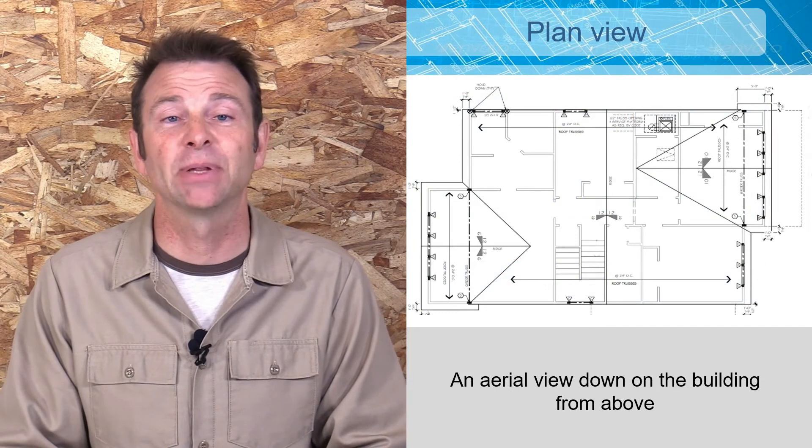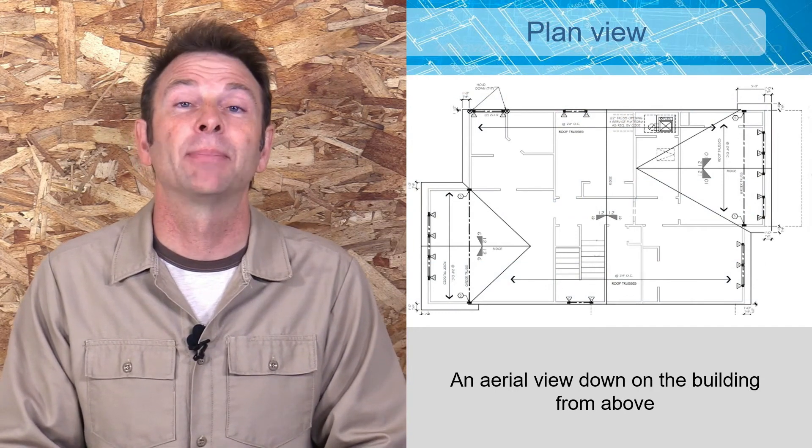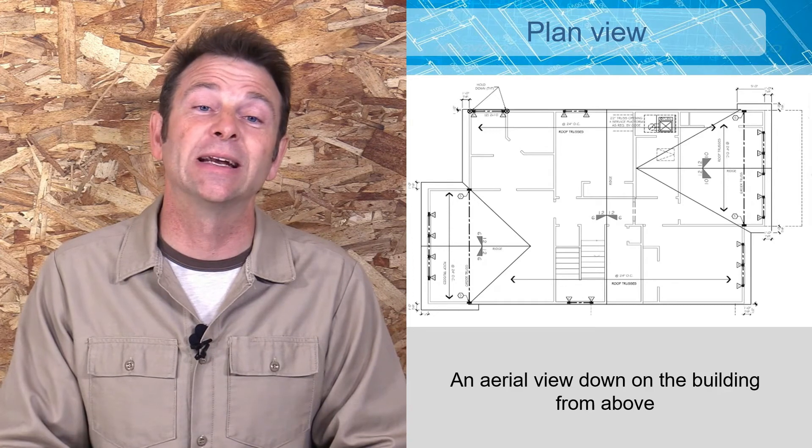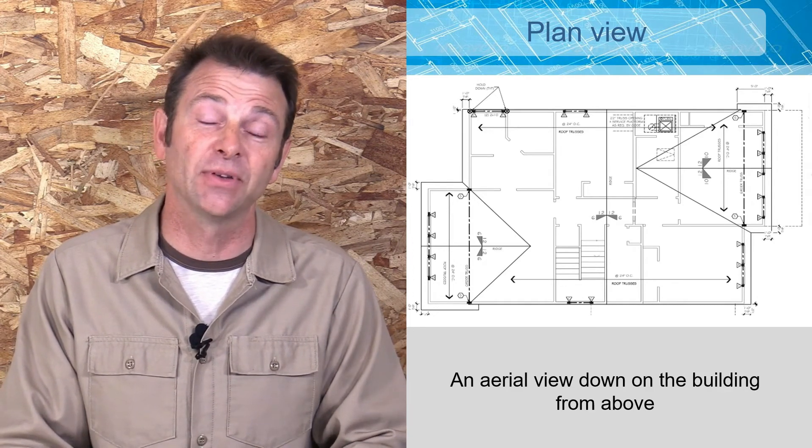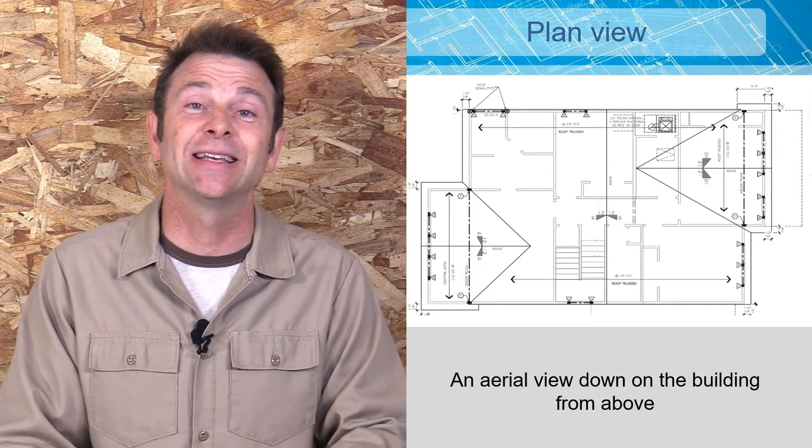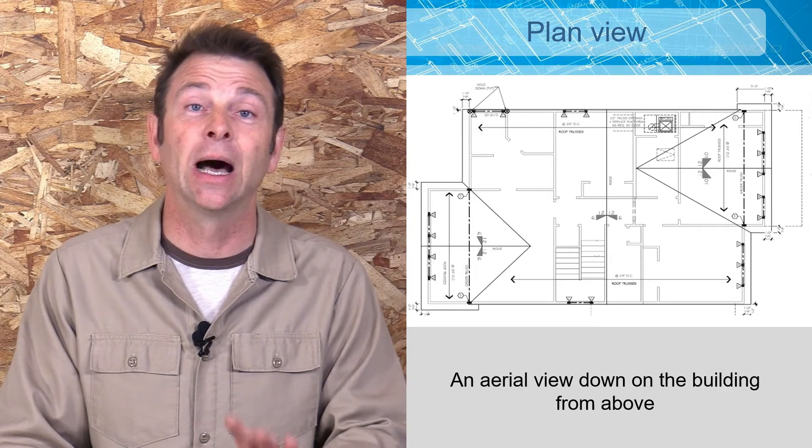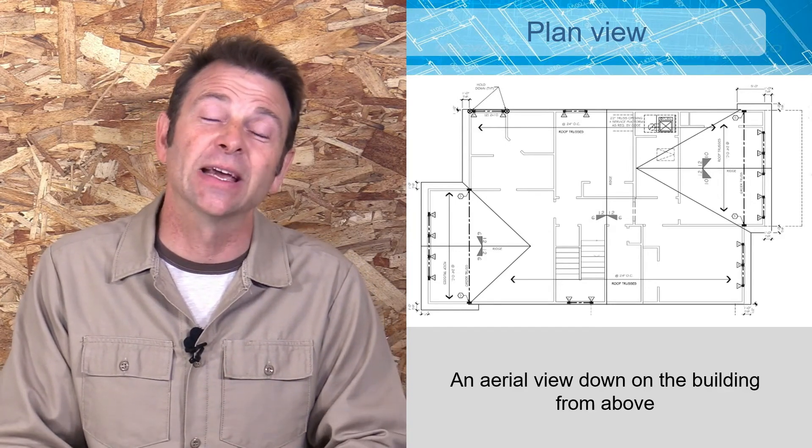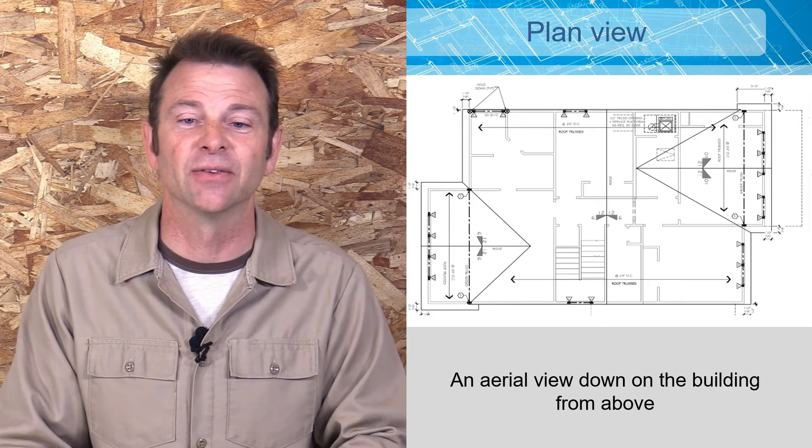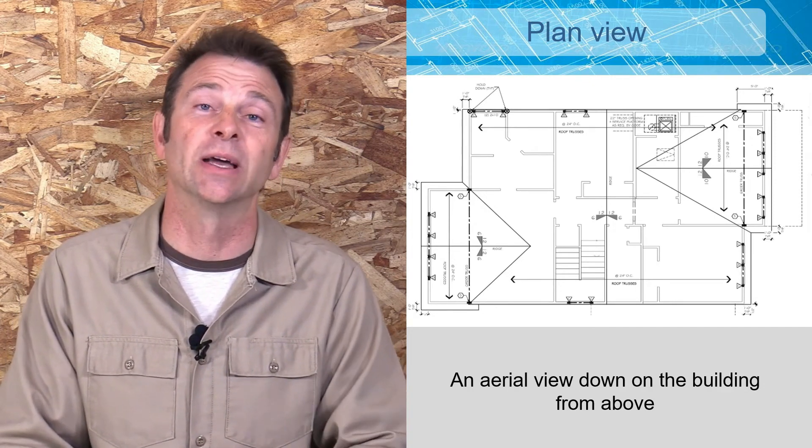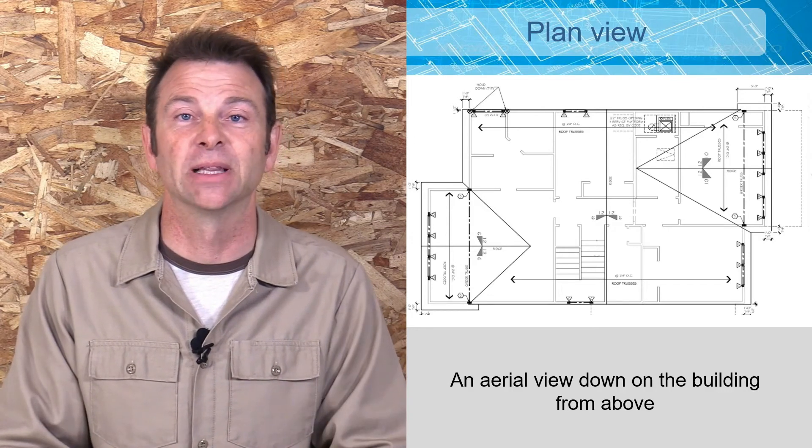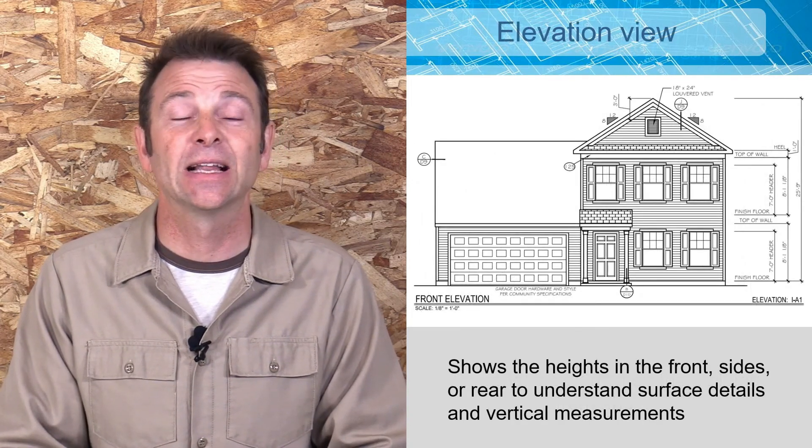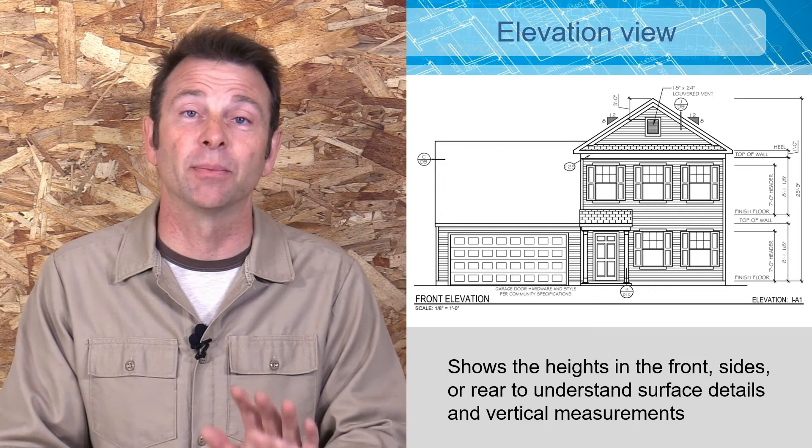Here you see a plan view. Universally, plan views are always from above. So if we were in an airplane or a bird's eye view, they call it sometimes, we're going to see this building from directly above it. This gives us a perspective that cannot be shown in any other view. So any details that need to be shown this way will reveal themselves in plan view.